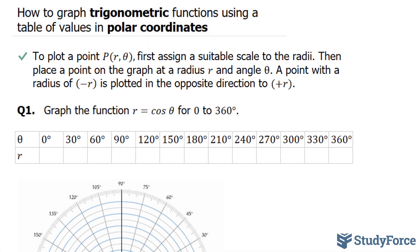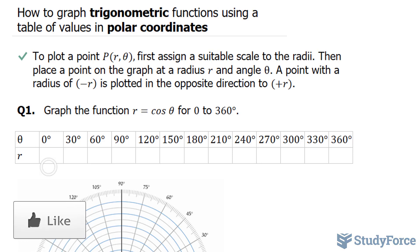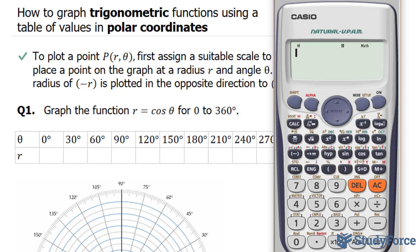The first thing I'll do for question 1, where they ask us to graph the function r equals cosine theta for angles between 0 and 360 degrees, is use my calculator to find all my r values ranging from 0 to 360. I'll turn on my calculator, type in cosine, and make sure that your calculator is in degrees. Cosine at 0 is equal to 1; cosine at 30 is equal to the square root of 3 over 2, and I would write that down in decimal form because it makes more sense when it comes to graphing. If you do this correctly, you should end up with a table that looks like this.